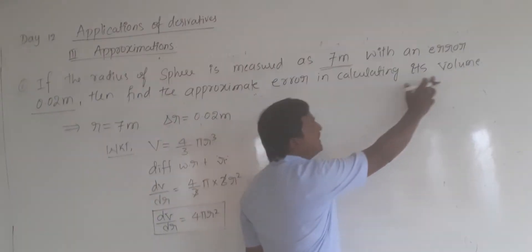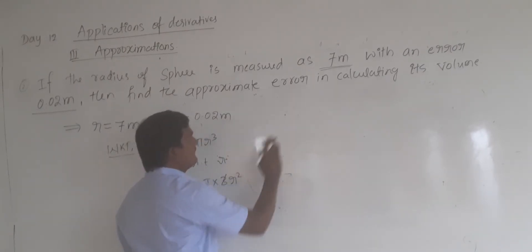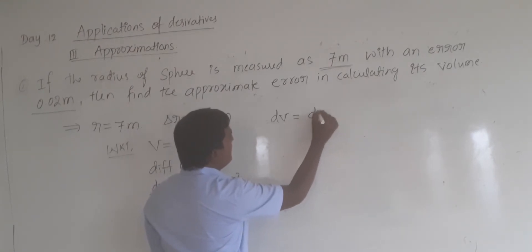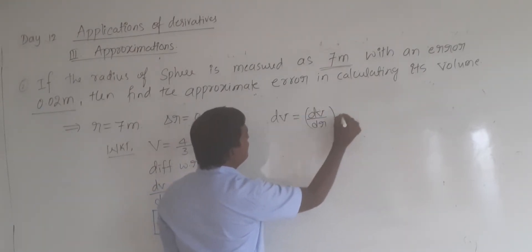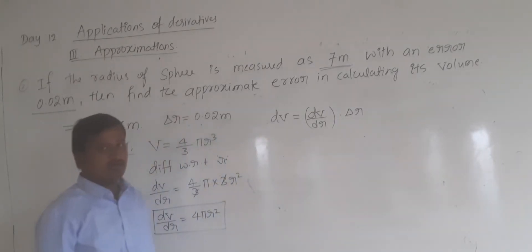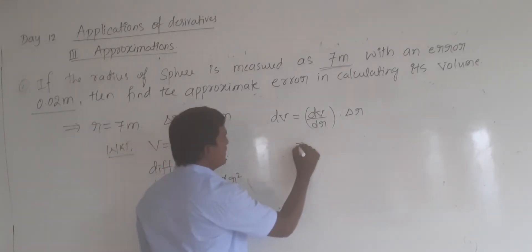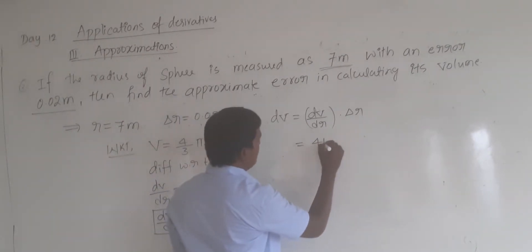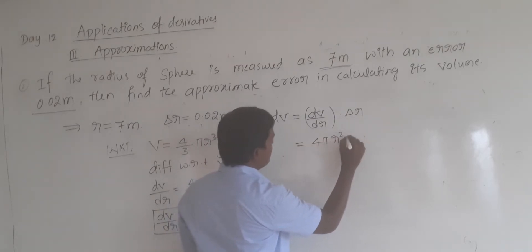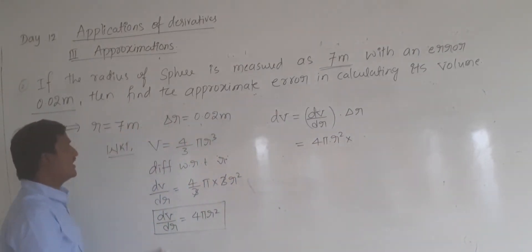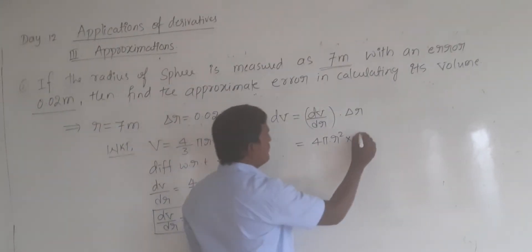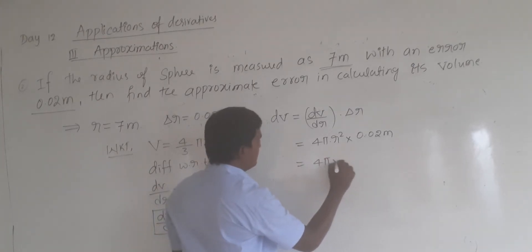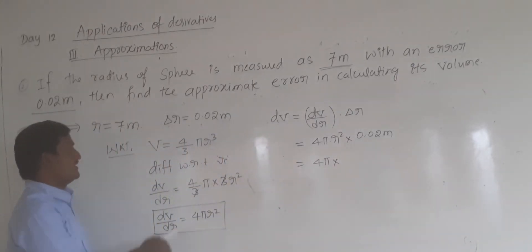Find the approximate error in calculating its volume. So we have to use dV is equal to dV by dr into delta r. Now what is the value of dV by dr? dV by dr is equal to 4 pi r squared. Into what is the value of delta r? Delta r is equal to 0.02 meter. So it becomes 4 pi into r squared, and r is equal to 7, so it is 7 squared.